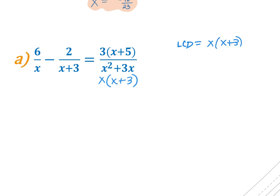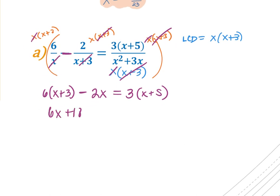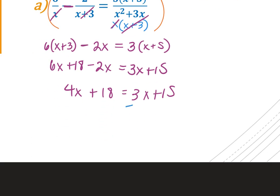I multiply all three fractions by x(x + 3). From the first fraction, the x cancels and I get 6(x + 3). There's a minus sign on the second term — one of the most common mistakes — so be careful: the (x + 3)s cancel and I get minus 2x. For the right side, the x's and (x + 3)s cancel, giving 3(x + 5). Expanding: 6x + 18 − 2x = 3x + 15, then 4x + 18 = 3x + 15.